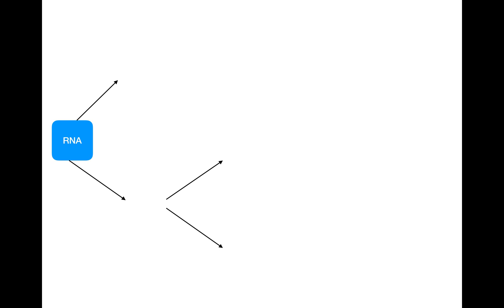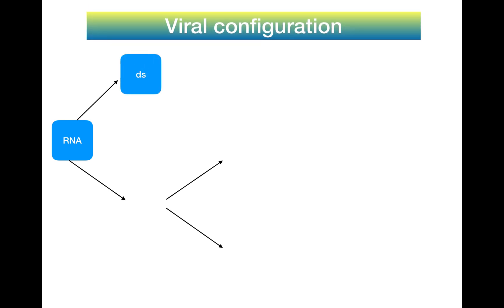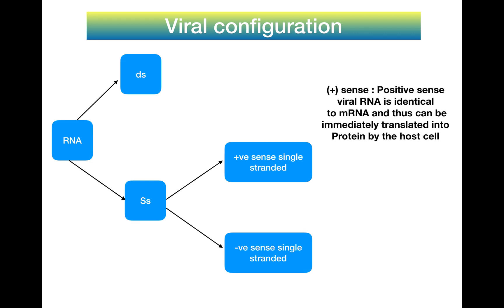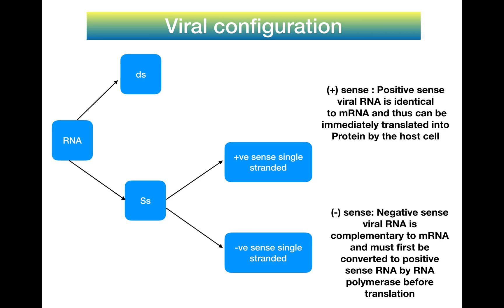The RNA genome itself can be divided into double-stranded or single-stranded. Single-stranded can be positive-sense or negative-sense single-stranded. Positive-sense viral RNA is identical to mRNA and thus can be immediately translated into protein by the host cell. Negative-sense single-stranded RNA is complementary to mRNA and must first be converted to positive-sense RNA by RNA polymerase before translation can occur.